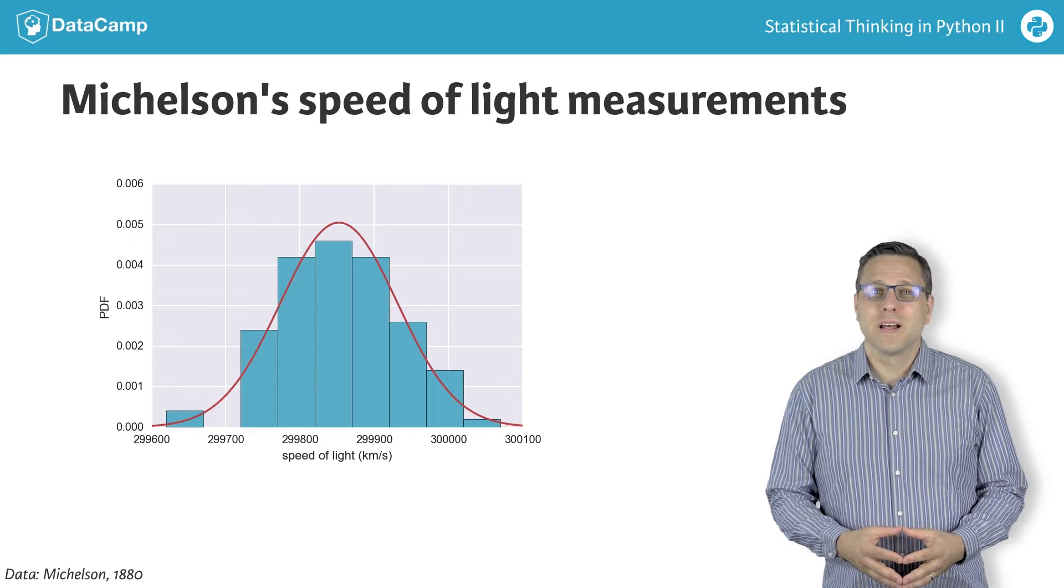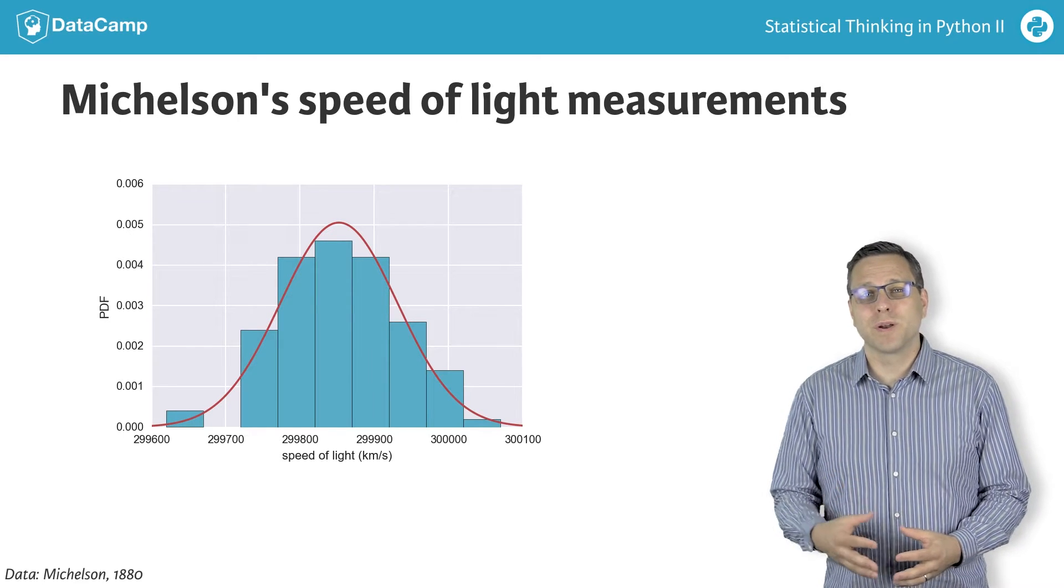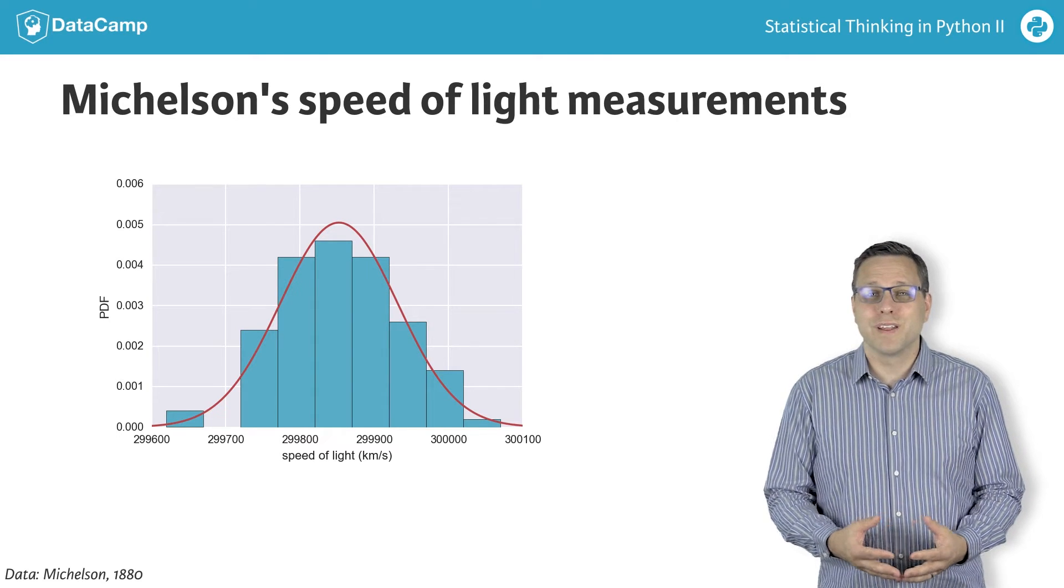Statistically speaking, that means he wanted to know what speed of light he would observe if he did the experiment over and over again an infinite number of times.